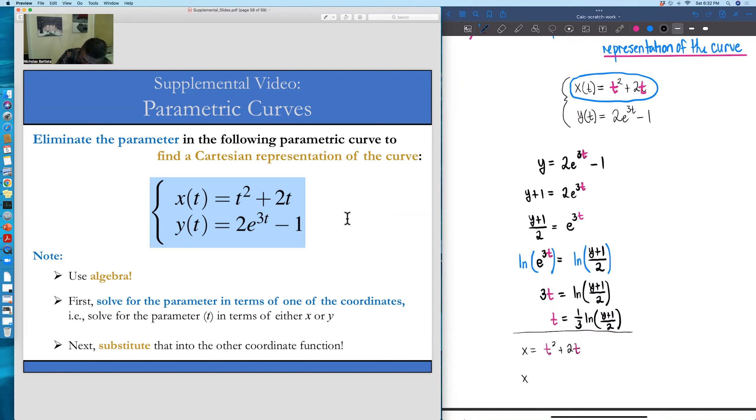So we have x is equal to the quantity 1 over 3 times the ln of y plus 1 all over 2, that whole thing squared.